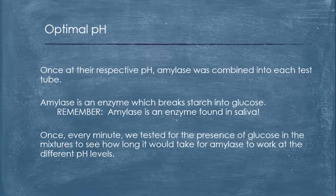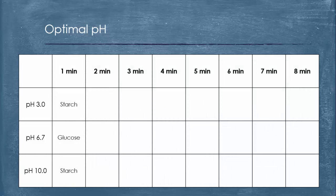Once every minute we tested for the presence of glucose in the mixtures to see how long it would take for amylase to work at the different pH levels. We used our drop plates. What we should have found was that immediately at one minute, the pH at 3.0, it's still not broken down the starch. The amylase at 6.7 did break down the starch and produce glucose almost immediately. And at the basic 10.0 pH, starch, it's still not broken down, nothing had changed.